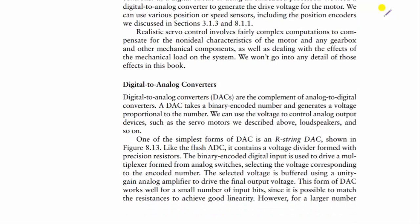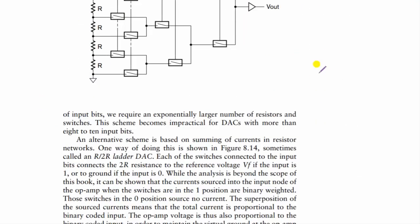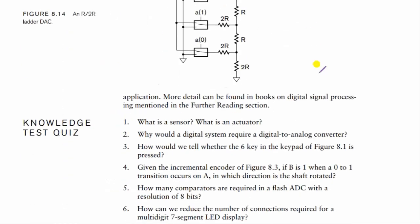Let us talk about D/A converters. We are familiar with R-2R ladder and weighted type D/A converters. The processed information is digital; since humans cannot understand machine language, D/A converters are required to convert digital data to analog data. The working of the R-2R ladder has been studied previously.